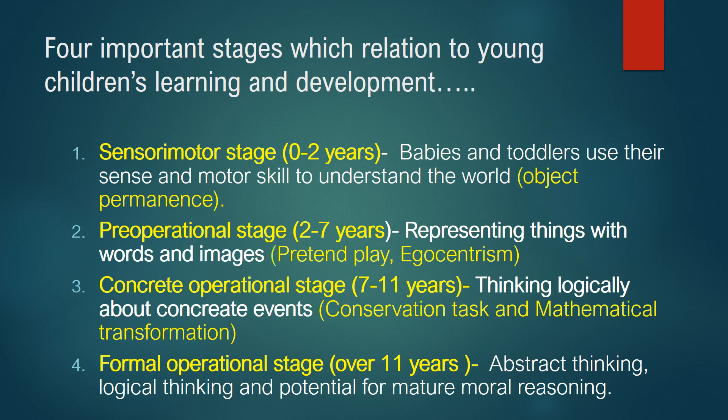The next stage is the concrete operational stage: seven to eleven years. Children start to think logically about concrete events. Piaget conducted a famous experiment called the conservation task and mathematical transformation. The final stage is the formal operational stage: over eleven years old. Children can think in abstract and logical terms and show potential for mature moral reasoning. At this stage, children are ready for problem solving and are very confident in logical and abstract thinking.